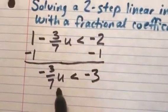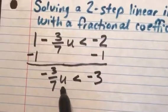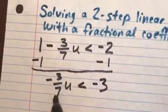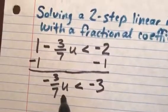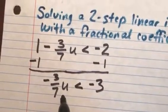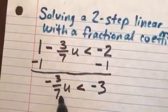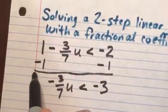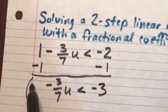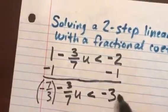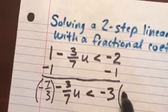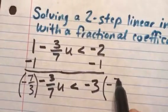My next step is to get the u by itself. I notice that I have a fraction multiplied times the u, and so to get rid of that fraction, I can multiply by its reciprocal. That means flipping the fraction upside down. So I'm going to flip negative 3 sevenths over and make it negative 7 thirds and multiply by that fraction on both sides of my inequality.